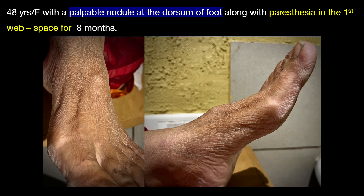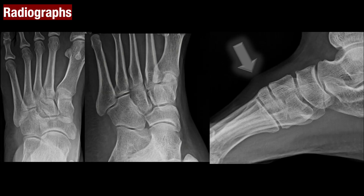We have a 48-year-old female with a palpable nodule at the dorsum of foot, along with paresthesias in the first web space for about 8 months. Clinically, the nodule was thought to be a ganglion. When we look at the frontal oblique and lateral radiographs of the foot, we really don't see anything in particular except a soft tissue density along the dorsum of the midfoot.